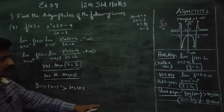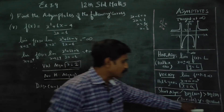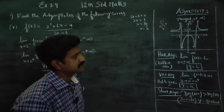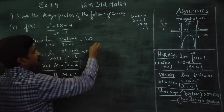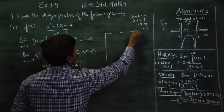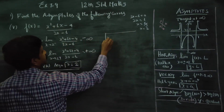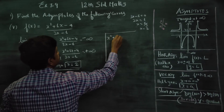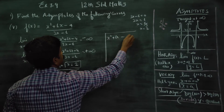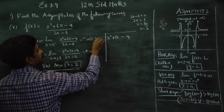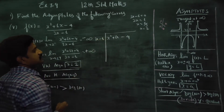Since the degree of the numerator is greater than the degree of the denominator, you can divide. We perform polynomial long division: divide x² + 6x - 4 by 3x - 6 to find the slant asymptote.